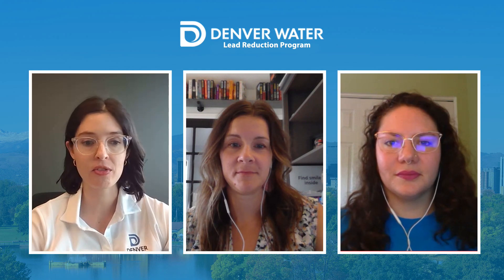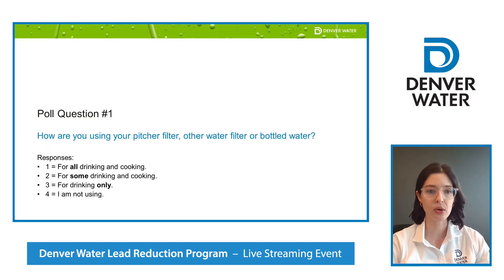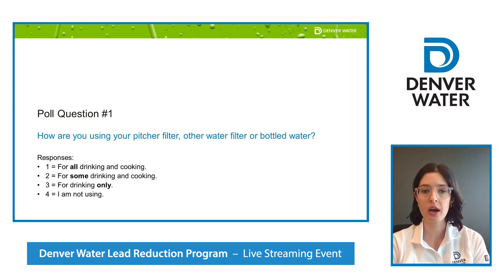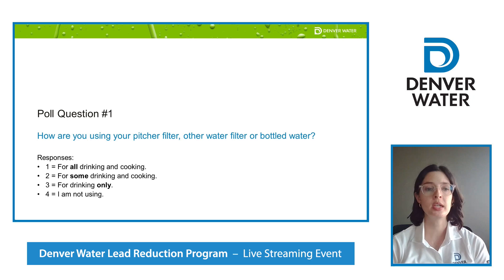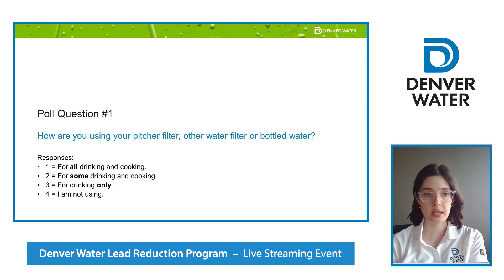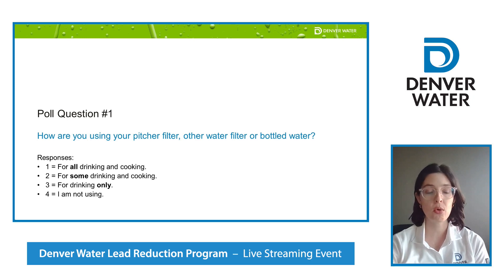We're going to jump into our first poll question — we'd love to hear from you. The question is: how are you using your pitcher filter, other water filter, or bottled water if you're in the lead reduction program? Press 1 for all drinking and cooking, press 2 for some drinking and cooking, press 3 for drinking only, and press 4 for I am not using the water filter.